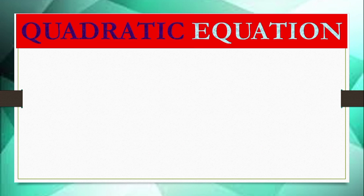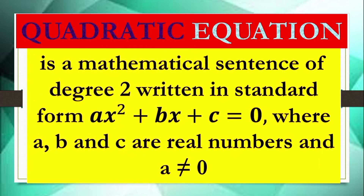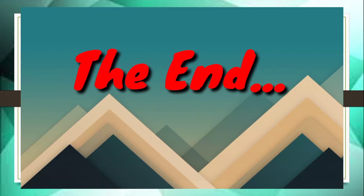So bear in mind, dear MathBuddies, the definition of a quadratic equation: it is a mathematical sentence of degree 2 written in standard form — ax² plus bx plus c equals 0 — where a, b, and c are real numbers and a is not equal to 0.